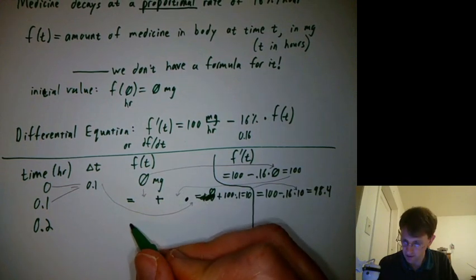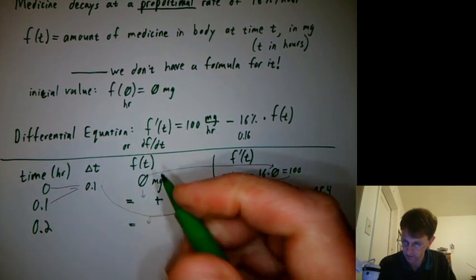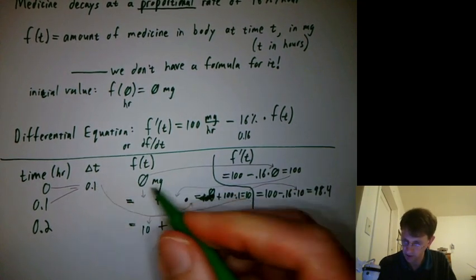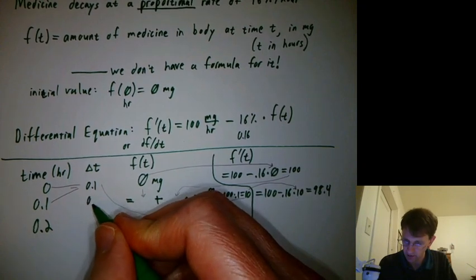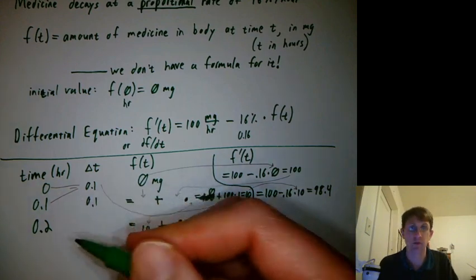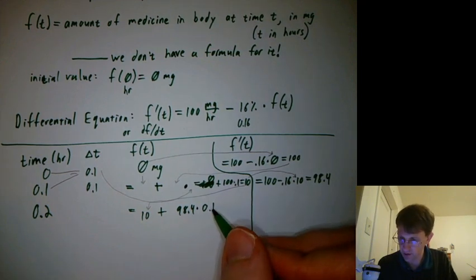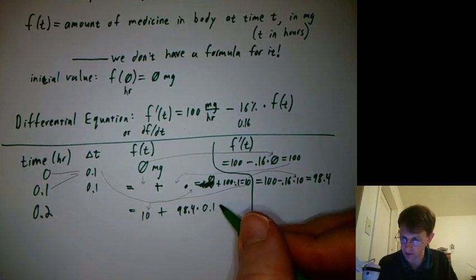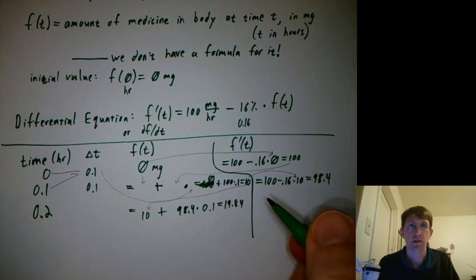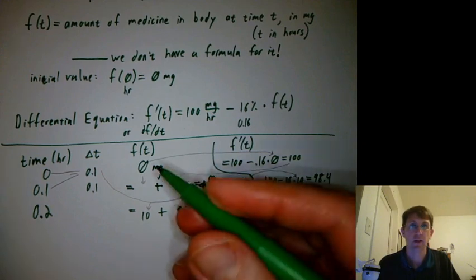And then here, I'd take this previous value, so I had 10, plus this value 98.4 times the new delta t. Here I'm using time steps that are all the same size, but you don't have to. It's perfectly fine to have slightly different time step values. So here I've added almost another 10, but not quite. So I think I'd end up with 19.84. It's still increased, but not quite by 10. The rate of increase is slowing down. And then I'd just repeat that.